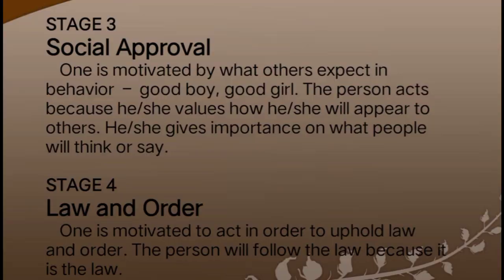There are two stages under the conventional level. Stage three is social approval: one is motivated by what others expect in behavior — the 'good boy' or 'good girl' orientation. The person acts because he or she values how he or she will appear to others, giving importance to what people will think or say.